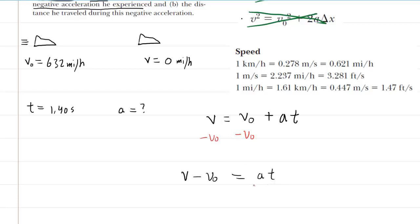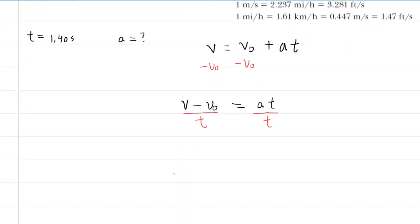And then, of course, to find the acceleration, we would divide both sides by the time interval. So now we have a nice equation we can use to find this negative acceleration.